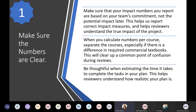When you calculate numbers per course, you should separate the courses, especially if there's a difference in required commercial textbooks. We see a lot of projects where multiple courses are being done on the same grant — departments trying to make their degree programs fully OER will group courses together on a bigger grant. The new application has room to separate courses and give us numbers for each course separately, whereas the previous application asked for an average of all of them. This will give us clearer numbers and help clear up common points of confusion during review.